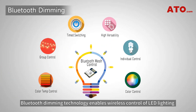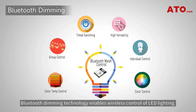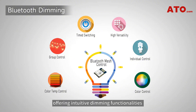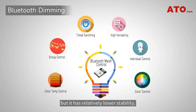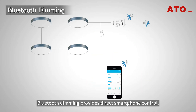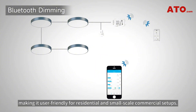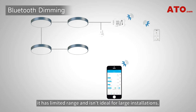Bluetooth dimming technology enables wireless control of LED lighting through mobile devices, offering intuitive dimming functionalities and smart lighting solutions for modern environments. This short-range wireless technology requires no wiring, offering convenient connection, precise dimming, low latency, and low power consumption, but it has relatively lower stability. Bluetooth dimming provides direct smartphone control, making it user-friendly for residential and small-scale commercial setups. While convenient for small spaces, it has limited range and isn't ideal for large installations.